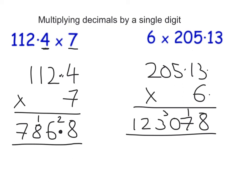Now I look at my question and see how many digits are behind the decimal point. That's 1, 2. So if there's 2 digits behind the decimal point in the question, there needs to be 2 in my answer. So my answer is 1,230.78.